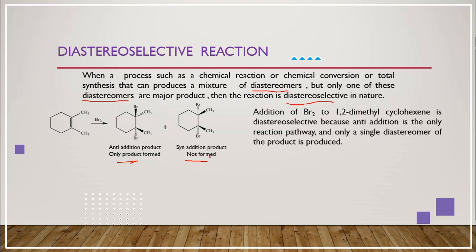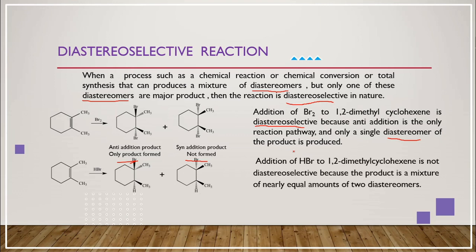Addition of bromine to 1,2-dimethylcyclohexene is diastereoselective because anti-addition is the only pathway and only a single diastereomer of the product is formed. Addition of HBr to 1,2-dimethylcyclohexene is not diastereoselective because the product is a mixture of nearly equal amounts of the two diastereomers.